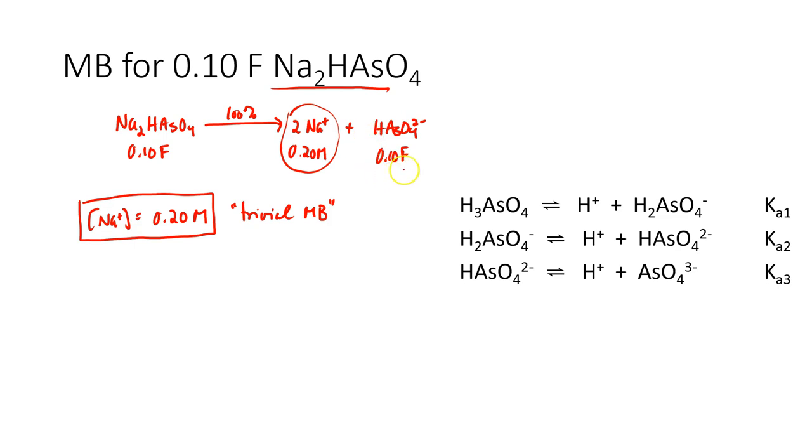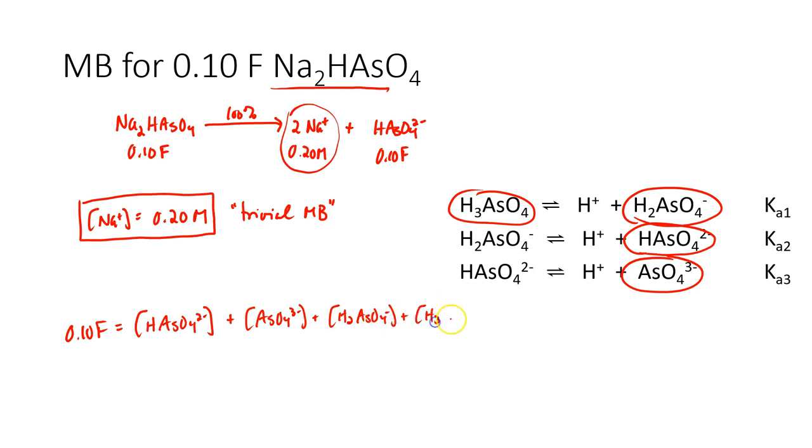The more interesting mass balance is the one about hydrogen arsenate. This 0.1 formal doesn't just equal the concentration of hydrogen arsenate, although it may have the highest concentration. It will also include the concentrations of all these different forms in which arsenic acid can exist. So, you've got to add them. There's one with a single proton, one that doesn't have any protons at all, the dihydrogen arsenate, and then the fully protonated form. So, this is another mass balance that we could write for this solution.